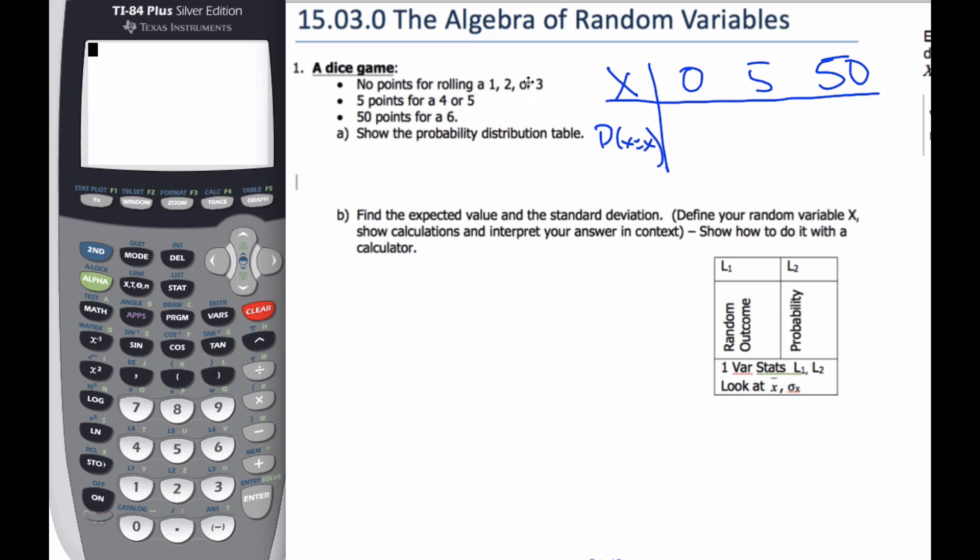And I know the rolls give me my probability, so I can get zero points half the time. Five points, two out of six, or one third, and 50 points, one out of six. So here's my probability distribution table.